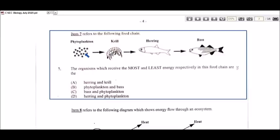The least amount of energy would have to be received by the bass, which is at the end of the food chain at the fourth trophic level. Remember there's a loss of energy at successive trophic levels, so you would expect the bass to have the least amount of energy. Therefore the correct answer would be B.